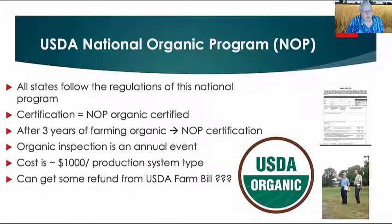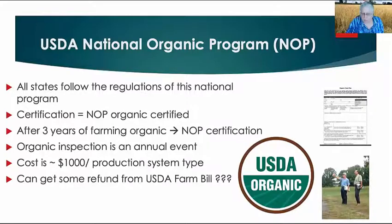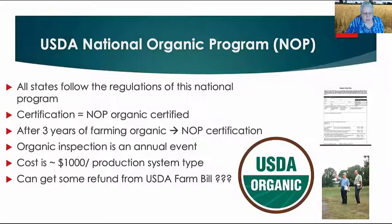The USDA National Organic Program started in 2002, after many states had their own programs. This made it a nationwide regulatory program, providing unification so that products sold across state lines were produced under the same certification system. It takes three years from the last non-organic input before a farm can be certified through the USDA as organic. Annual inspection is required — not just your first year — and the cost is typically around $1,000 per production system, meaning if you have field crops and poultry, those are two different systems.